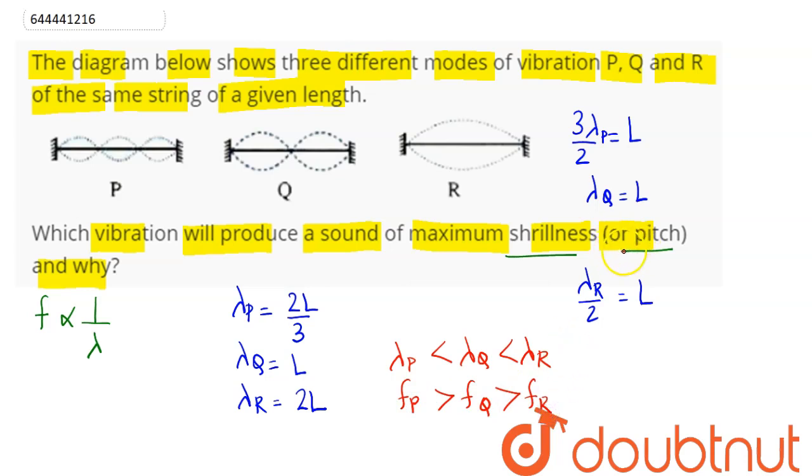And here we can say the frequency is maximum for P, which means pitch will be maximum for P or shrillness will be maximum for P. Hence our answer is P will have maximum shrillness amongst the three waves. Hence P is our answer.